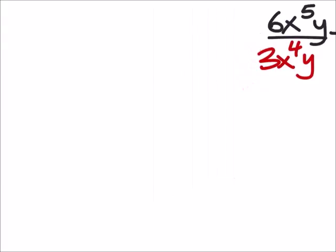For example, it may be good to just kind of ignore all the other stuff and focus on this one term at a time. For example, this 6x to the power of 5y, so we do 6 divided by 3 which is 2, x to the power of 5 divided by x to the power of 4.